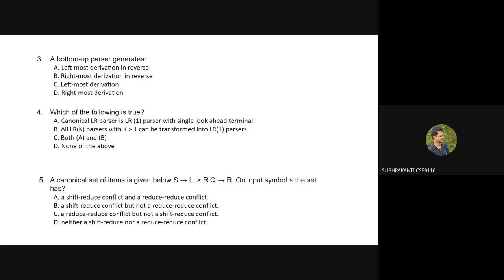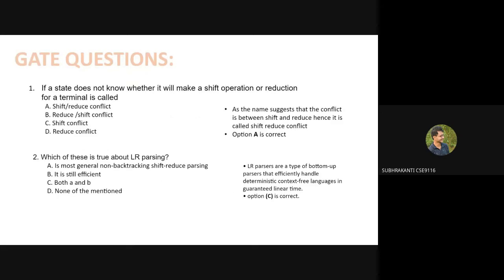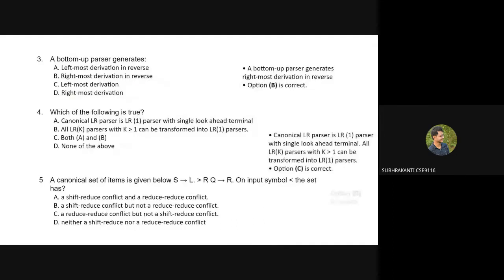Shifting means moving from one state to another by reading a terminal or non-terminal symbol. Reducing means reaching the final state when the dot operator is at the rightmost position. For example, T→id· means id can be reduced to T, since this is a bottom-up parser reading from bottom to top.